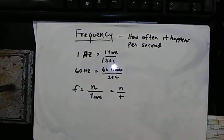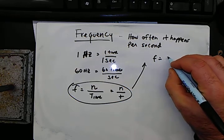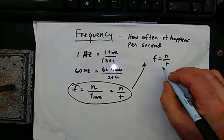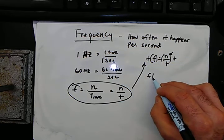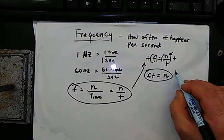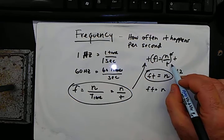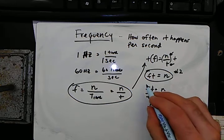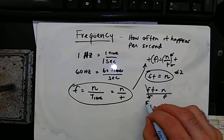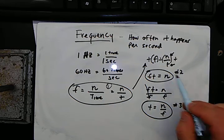A common example of frequency can be seen on the dashboard of a car, noting your revolutions per minute of the engine crankshaft. So frequency is n over t, and this is a three-way formula. We can solve for n: frequency times time is the number. And the third rendition of the formula, solving for time: time is the number over frequency. So we have three renditions of the frequency formula.